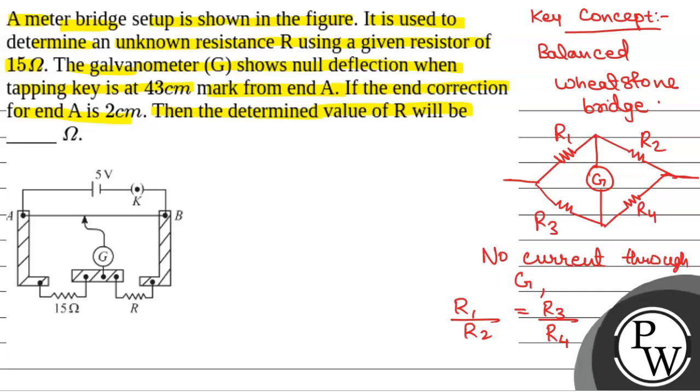Now, from concept of balanced Wheatstone bridge and adding the end correction, we will have - tapping key is at 43 cm, so this will be 43 cm. The end correction is 2 cm...